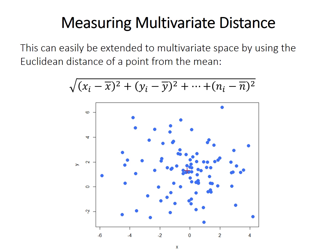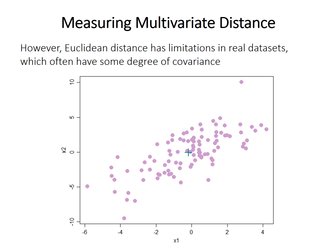If we wanted to know the Euclidean distance between a point and the multivariate mean, which is the cross in the graph here, we could easily calculate that with this formula. However, Euclidean distance has limitations when the variables have covariance, as illustrated here, which is relatively common in real datasets.